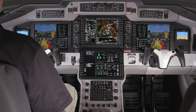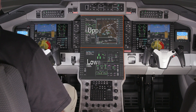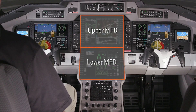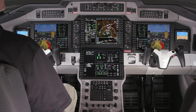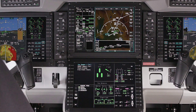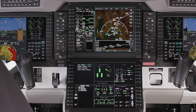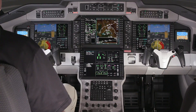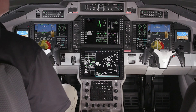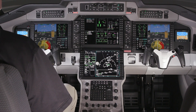The Pilatus PC24 is equipped with two multi-function displays, or MFDs. In the standard configuration, the upper MFD is used as the situational MFD, and the lower MFD is used as the systems MFD. The swap button on the MFC can be used to swap the situational MFD with the systems MFD.